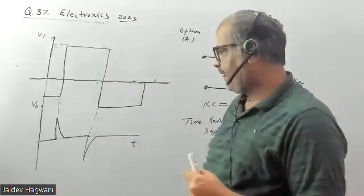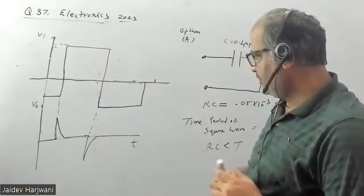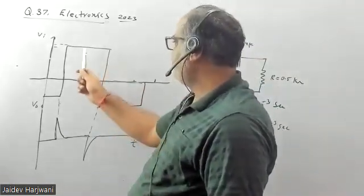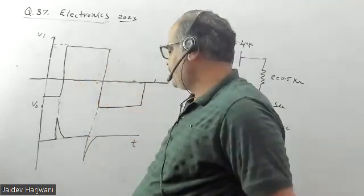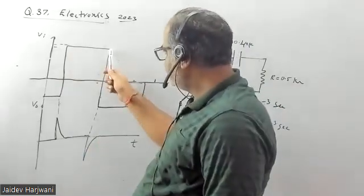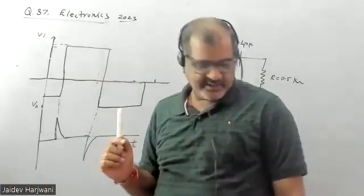They are given four circuits. If you carefully see this circuit, whenever the input voltage is constant you are getting zero output. And whenever there is a sudden change of input you are getting a spike.